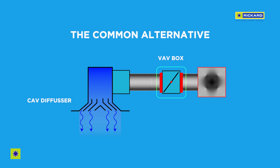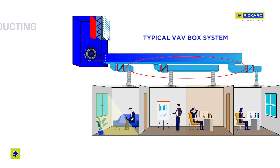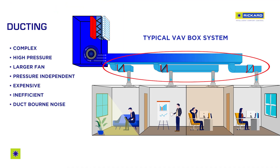Here is an example of a VAV box and constant volume diffuser attached. As you can see, the ducting used in a VAV box system is complex and more expensive due to the secondary ducts routed to the VAV boxes. This high-pressure ducting results in the system requiring a bigger, more expensive fan that is expensive to run. It creates more duct-borne noise and is pressure independent, preventing fan energy savings when the air-conditioning demand is low.